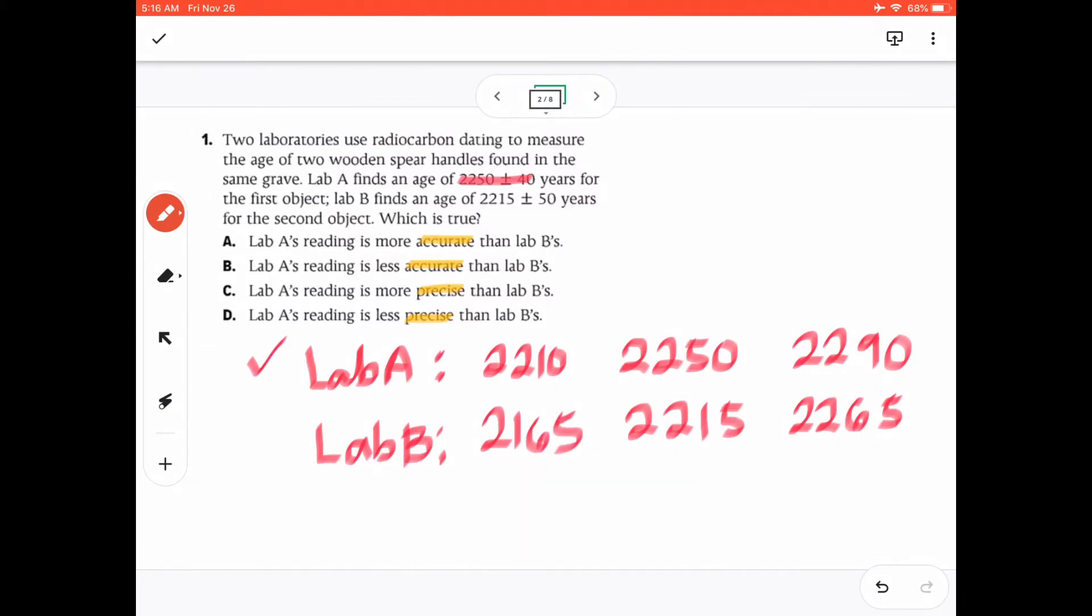So as you can see, the values of lab A, the readings of lab A are closer together than lab B. So in this case, lab A's readings are more precise. The answer to this question will be letter C.